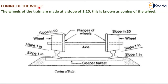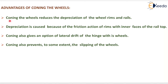The next topic is the coning of the wheel. The wheels of the train are made at a slope of 1 in 20; this is known as coning of the wheel. Advantages of coning the wheels: it reduces the depreciation of wheel rims and rails, caused by friction of rims with inner faces of the rail top. Coning also gives an option of lateral drift of the axle with its wheels, and prevents to some extent the slipping of the wheels.